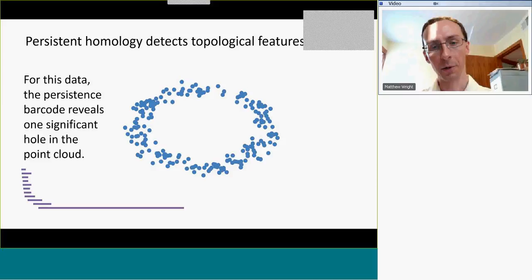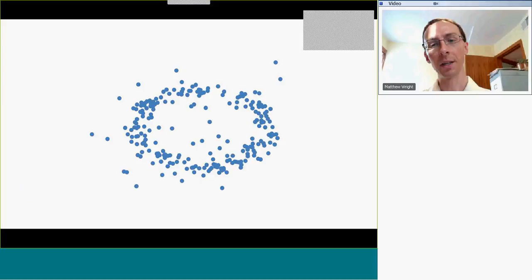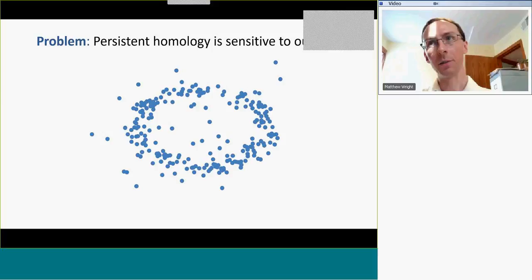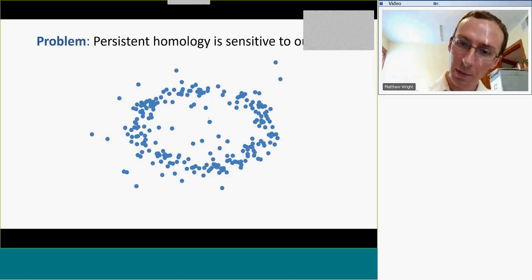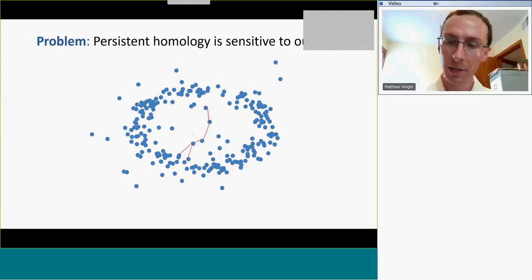The barcode for this point cloud would look something like what I'll draw on the screen. But if we have outliers in the point cloud — if instead our cloud looks like this, for example — persistent homology is not as effective. Persistence is sensitive to outliers. So if we build the traditional Vietoris-Rips filtration, these simplices in the middle will appear, and there will be connections that appear across the middle of the cloud, and that will obscure the presence of this central hole.